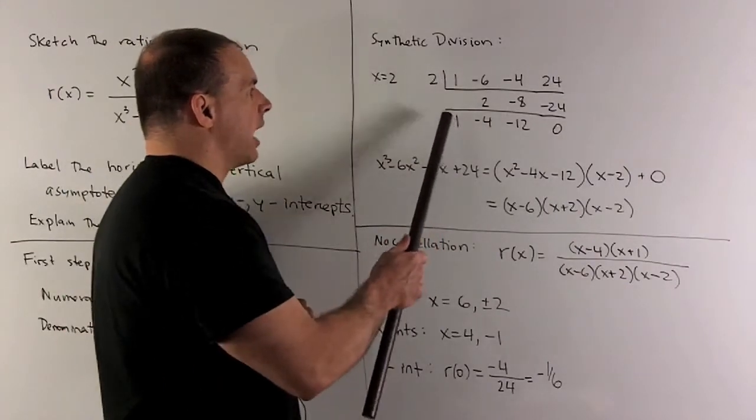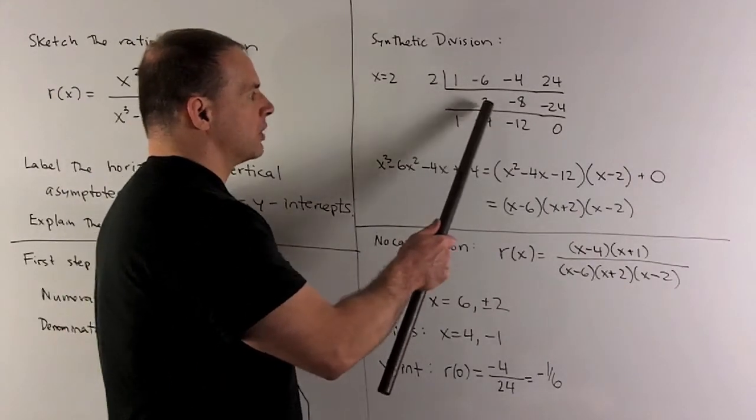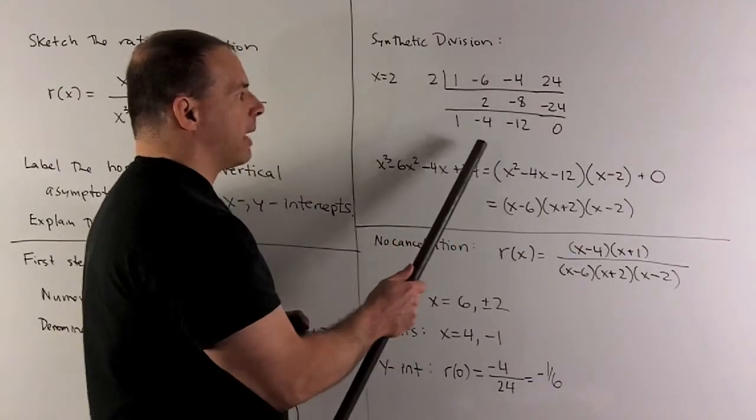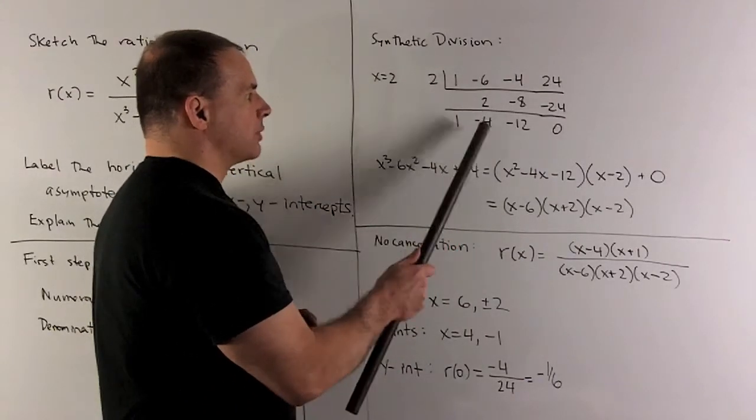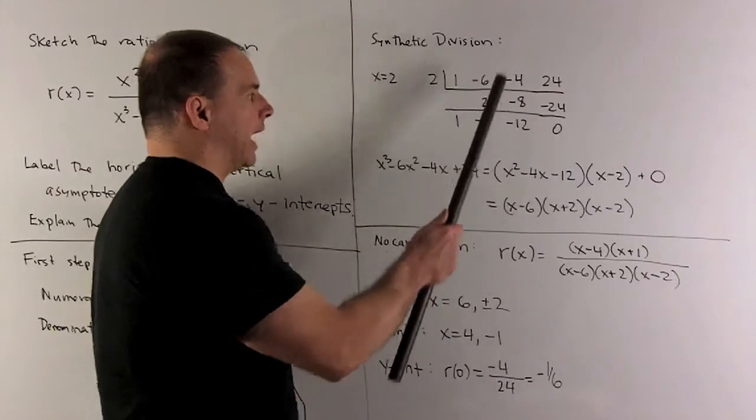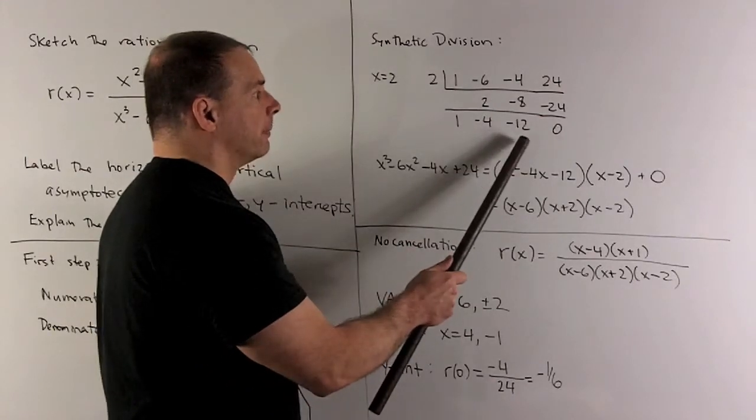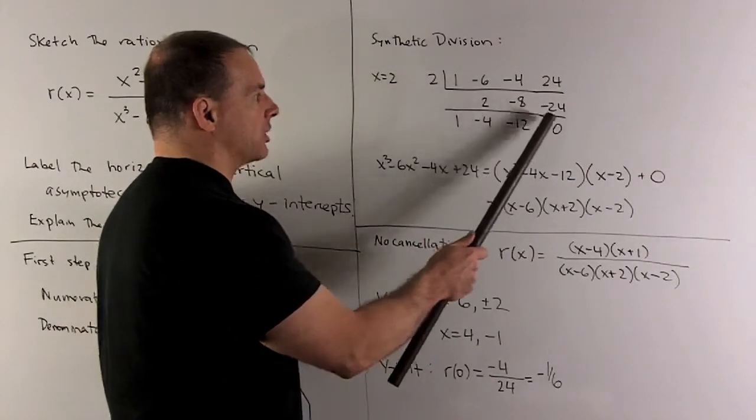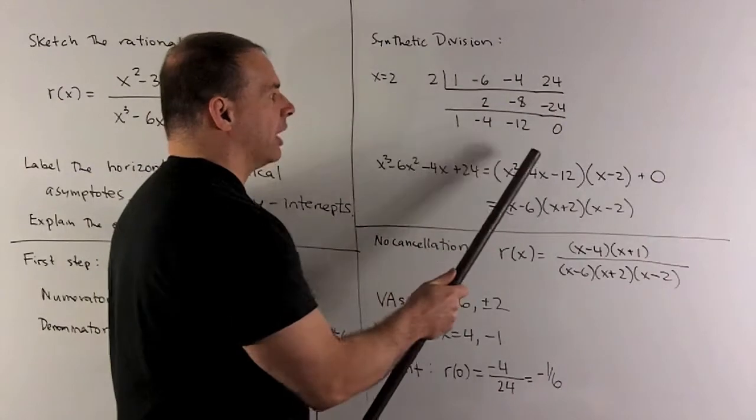Let's do our operation. So the 1 comes down, I multiply by 2, goes to the middle row is 2. We add down, we get a -4. 2 times -4 gives me a -8. We add down, I get a -12. 2 times -12 gives me a -24. I add down, I get a zero.